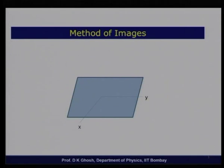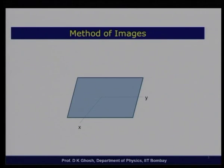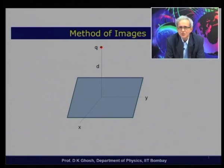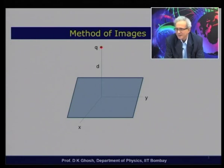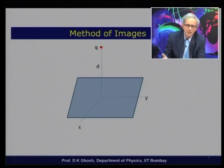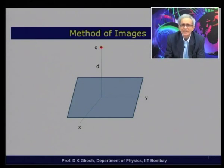Suppose I have an infinite conducting plane, which I have taken to be in the x-y plane. This plane I will take to be grounded — that is, at zero potential. What we have is a charge q located at a distance d above this conducting plane. For convenience, I will take the z-axis pointing upward. So I have an x-y plane at zero potential and a charge q located at a distance d along the z-axis.